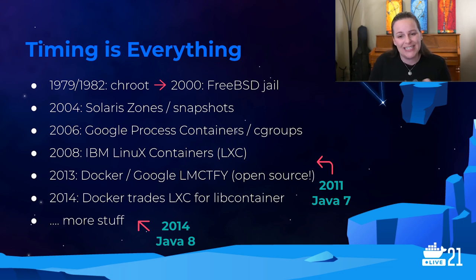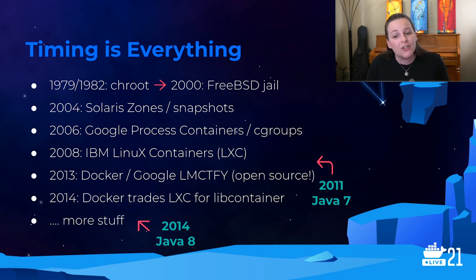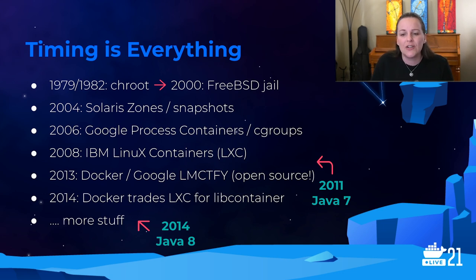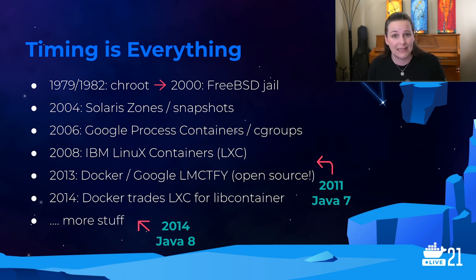Several years later in 2000, FreeBSD expanded the concept and introduced the more sophisticated jail command and utility in the FreeBSD 4.0 release. Features that were later improved in the 5.1 and 7.2 releases helped to further isolate file systems, users, and networks, and included the ability to assign an IP address to each jail. In 2004, Solaris Containers and Zones brought us ahead even further by giving an application full user process and file system space and also access to system hardware.